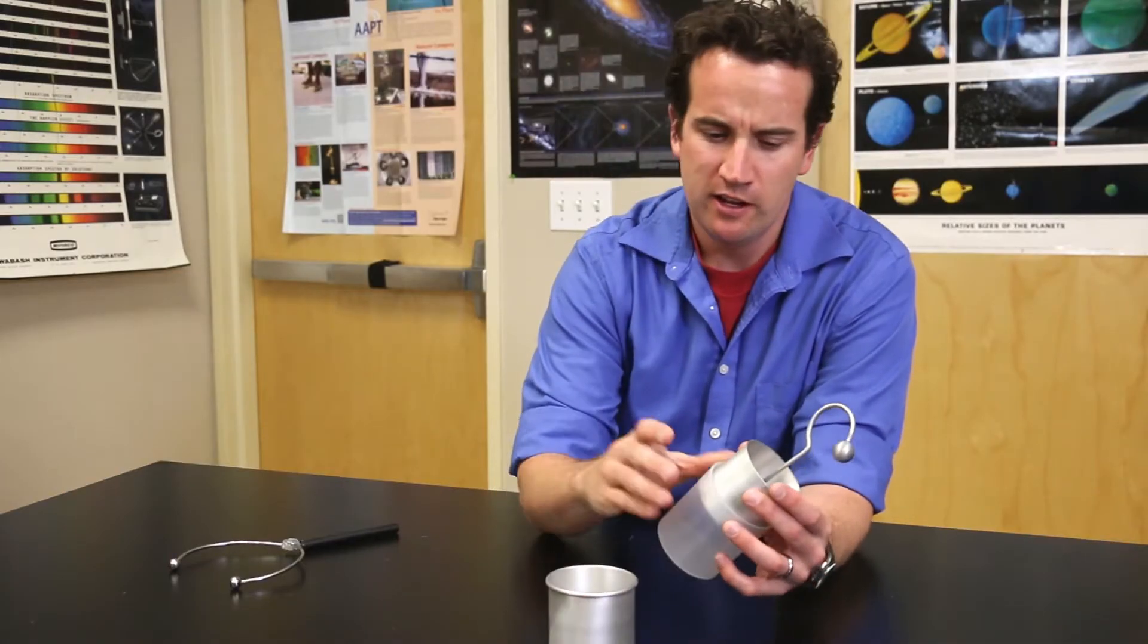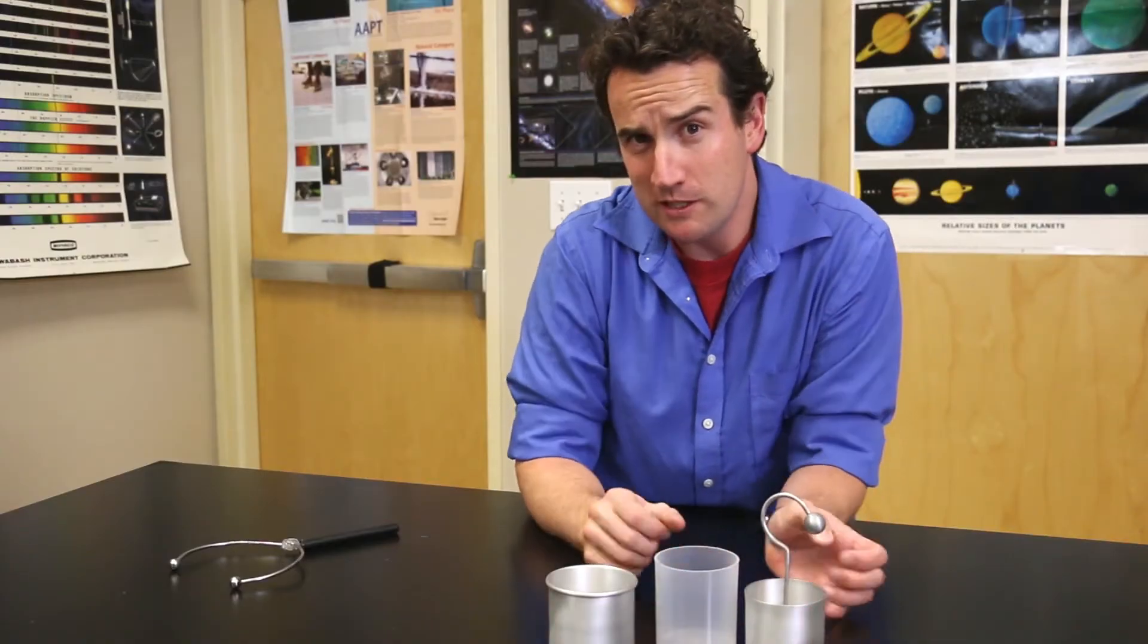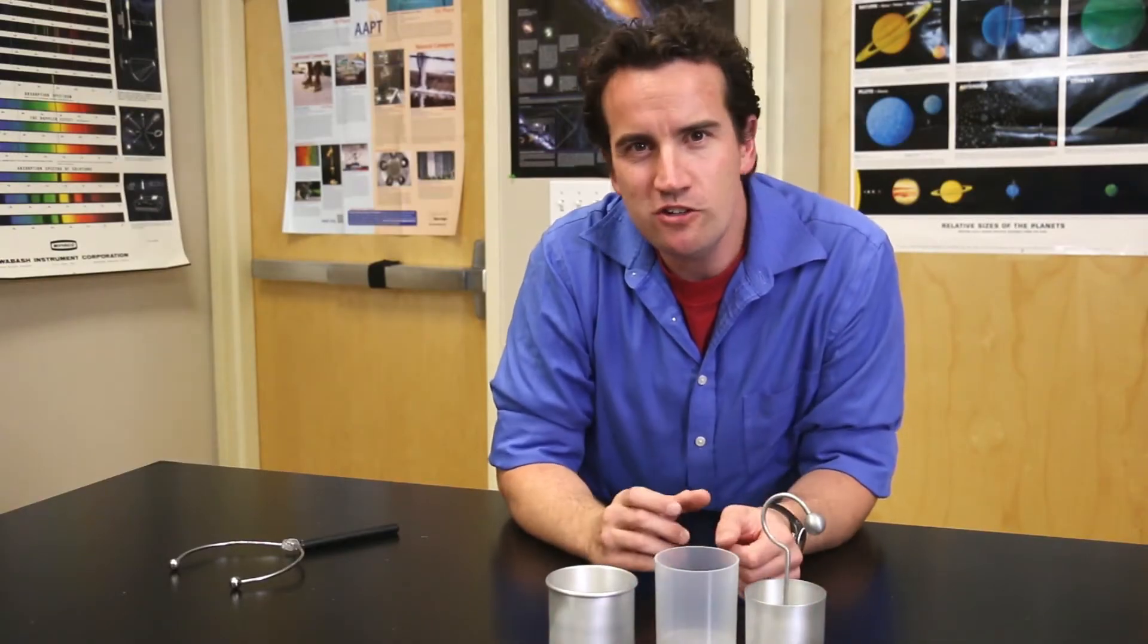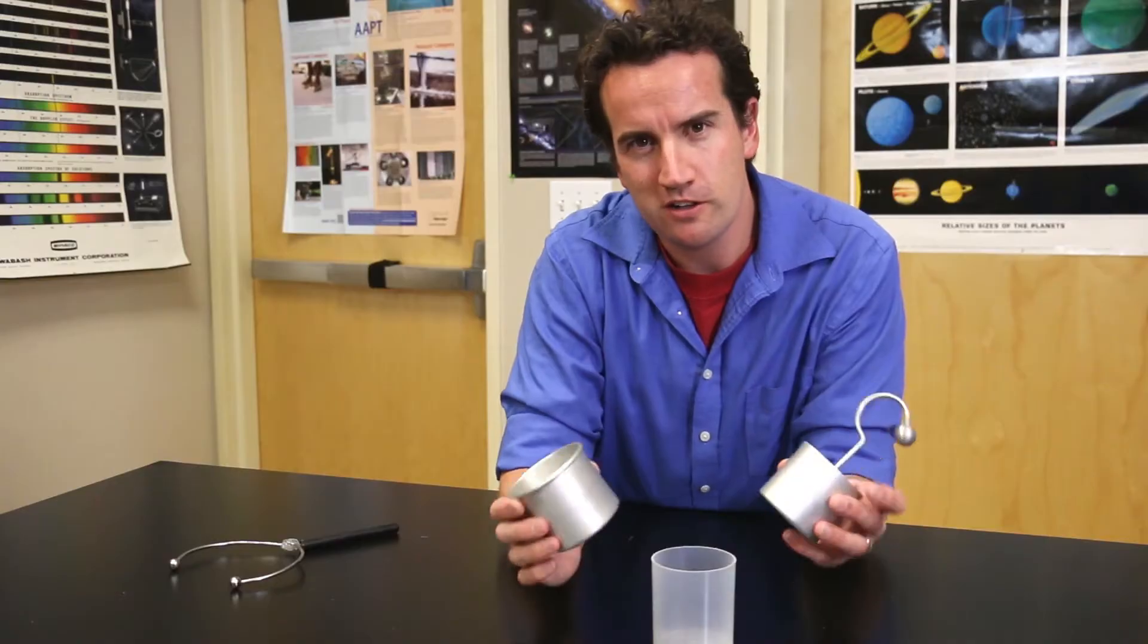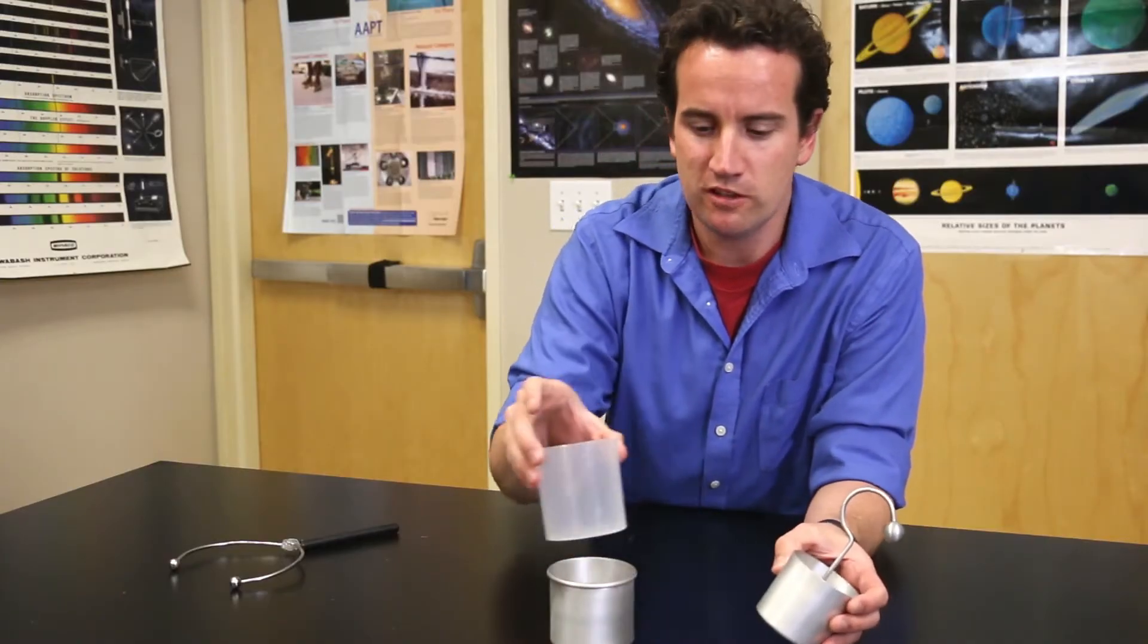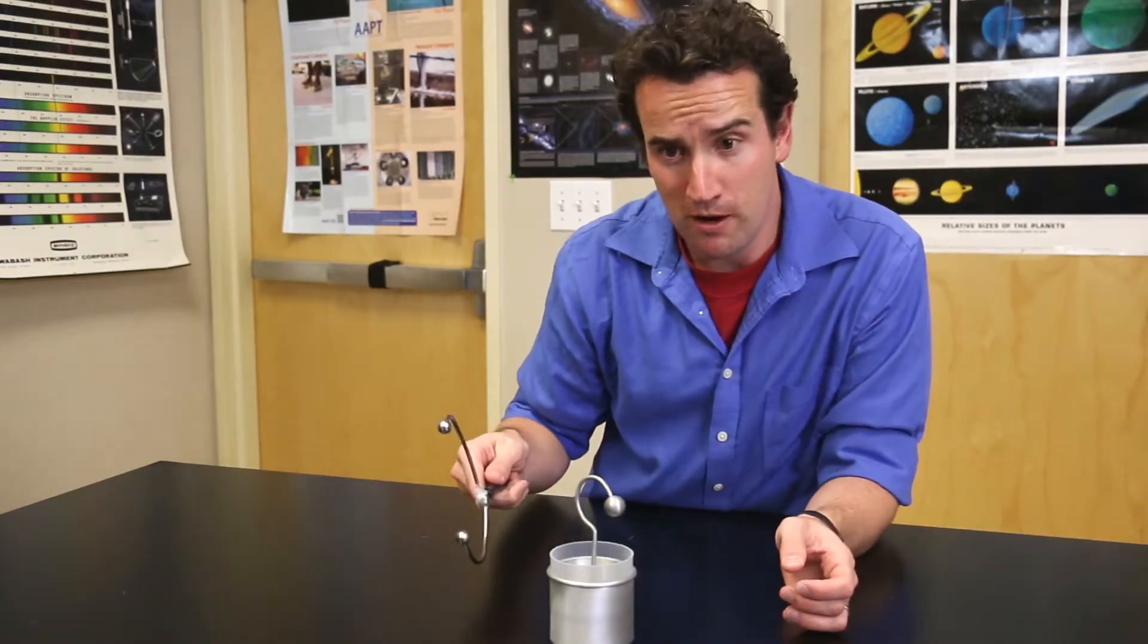But unlike a battery, the Leyden jar doesn't store chemical potential energy. Instead, the energy is stored by the separation of positive and negative charge. It's then released when the two charges are brought back into contact.